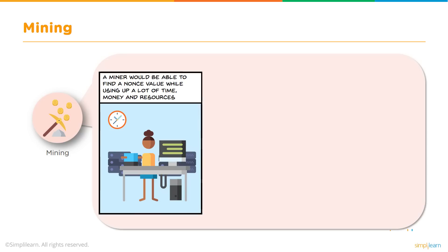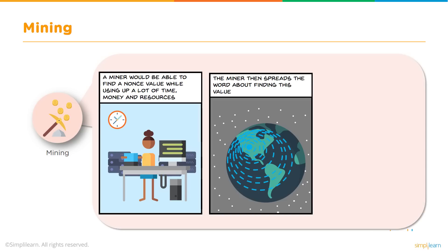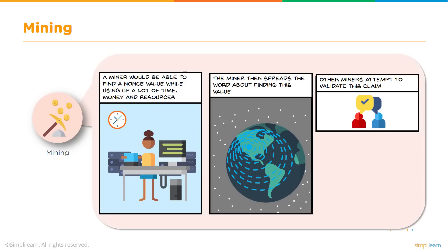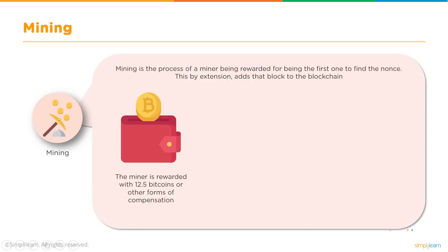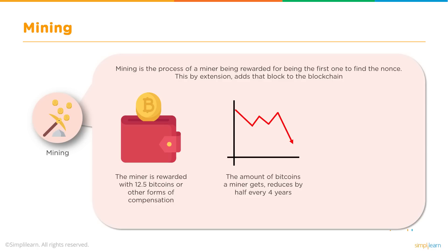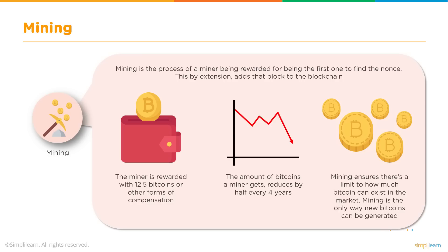Mining: a miner is able to find a nonce value while using up a lot of time, money, and resources. The miner then spreads the word about finding this value. Other miners attempt to validate this claim, and if verified by other miners, then only the miner gets rewarded. Mining is the process of a miner being rewarded for being the first one to find the nonce — the mathematical puzzle. As of today, a miner is rewarded with 12.5 Bitcoins. The reward gets halved every four years because there is a limited supply of Bitcoin. Mining ensures there is a limit to how much Bitcoin can exist, and it is the only way new Bitcoins can be generated.